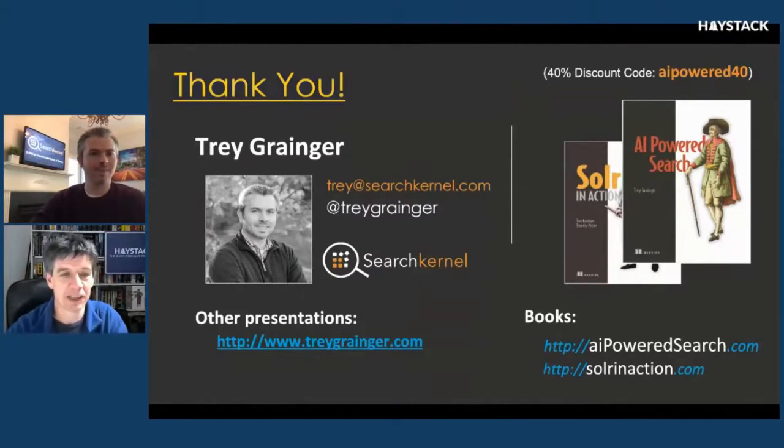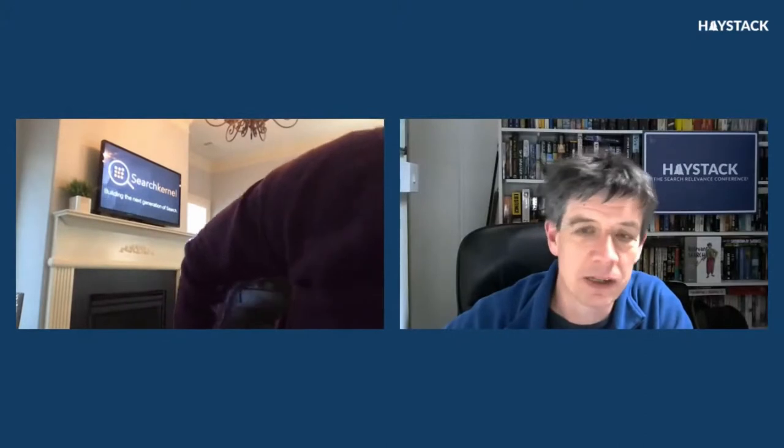Charlie: Thank you, Trey. Fascinating as always. We do have a few questions. There's also a breakout room and I'm sure Trey would be happy to answer some questions in the Slack. A couple of combined questions: Mateo asks, are vectors always composed of non-negative components? And Peter adds about using dot product and cosine distances in search — in Lucene 8, negative scores are prohibited, but dot product and cosine distance can return negatives. How do we work around this?